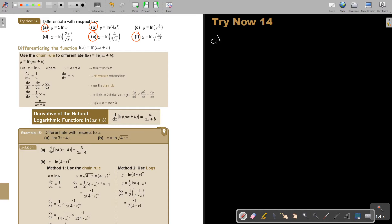Let's start with number A. Y equals 5 ln x. So, if I differentiate, it's just 5 times ln x is 1 over x. So, the answer is 5 over x.